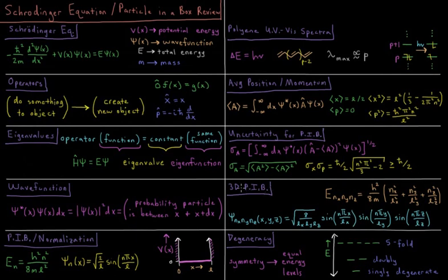Extending this to three dimensions, we have the energy is now a function of three quantum numbers, one for each dimension, each starting at 1 and going up as an integer. We have h-squared over 8m, nx-squared over lx-squared, plus ny-squared over ly-squared, plus nz-squared over lz-squared—length in each dimension and each individual quantum number. And the wave function then is a product of the wave functions from each individual dimension.